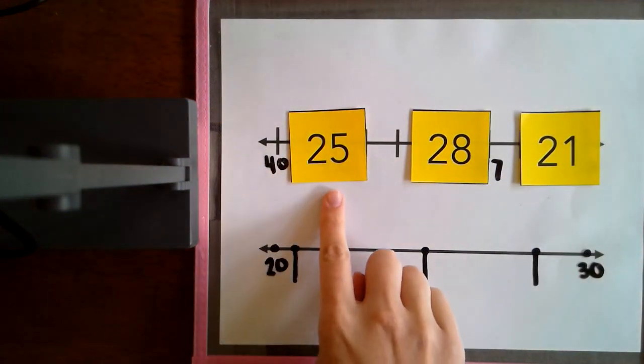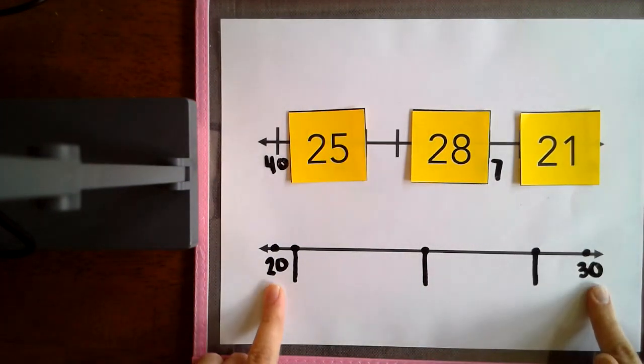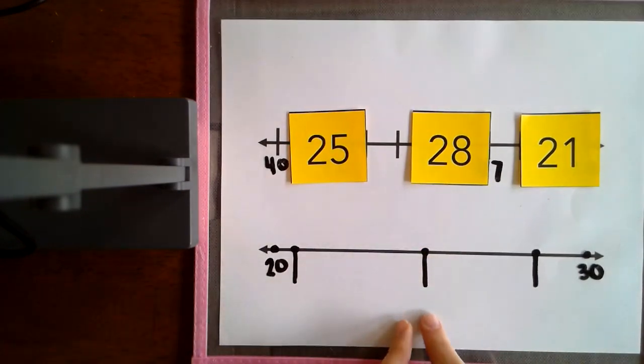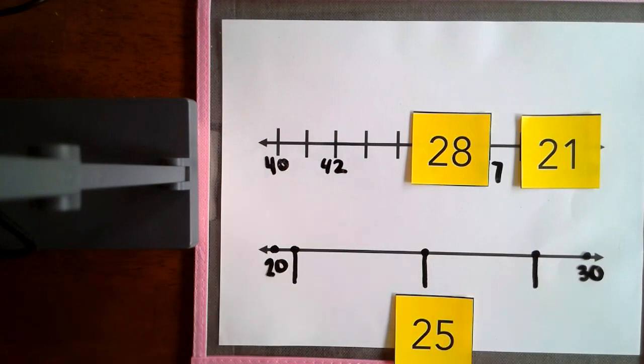So we're going to use those three to place them on this number line. Let's start with 25. Well, 25 is in the middle between 20 and 30, and this line is in the middle. So we're going to place 25 right there.